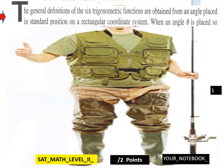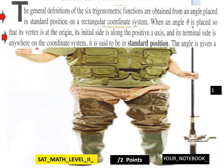Page 1 of Chapter 7, Part 1. The general definitions of the six trigonometric functions are obtained from an angle placed in standard position on a rectangular coordinate system. When an angle theta is placed so its vertex is at the origin, its initial side is along the positive x-axis, and its terminal side is anywhere on the coordinate system, it is said to be in standard position.